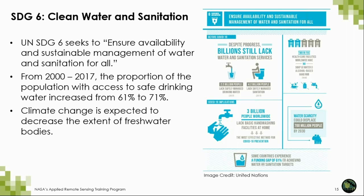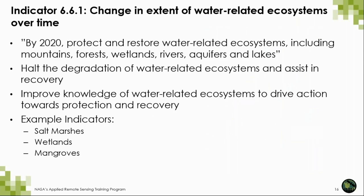SDG 6, Clean Water and Sanitation, seeks to ensure the availability and sustainable management of water and sanitation for all. From 2000 to 2017, the proportion of the population with access to safe drinking water increased from 61 to 71%. However, climate change is expected to decrease the extent of freshwater bodies. Today we'll focus specifically on Indicator 6.6.1, which addresses the change in extent of water-related ecosystems over time. The goal of Indicator 6.6.1 is to protect and restore water-related ecosystems — including mountains, forests, wetlands, rivers, aquifers, and lakes — and to halt their degradation. Examples of these water-related ecosystems include salt marshes, wetlands, and mangroves.